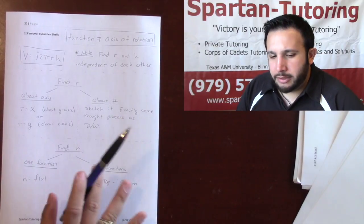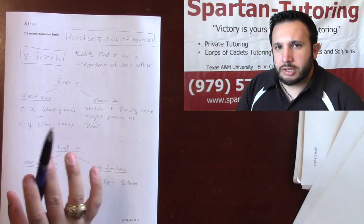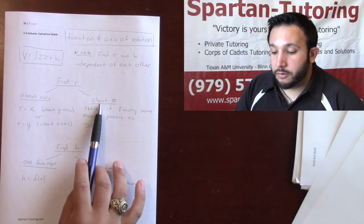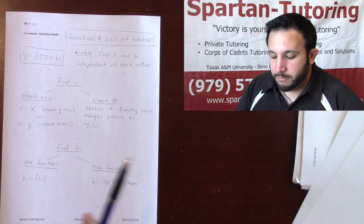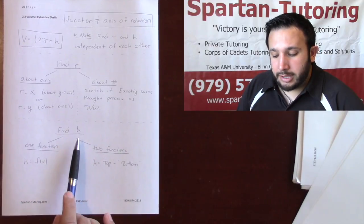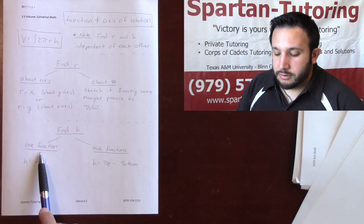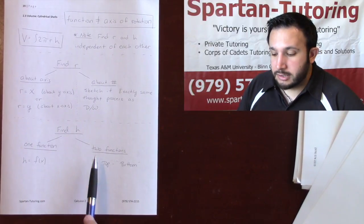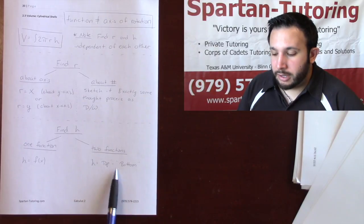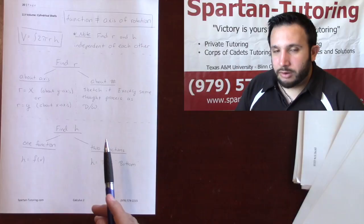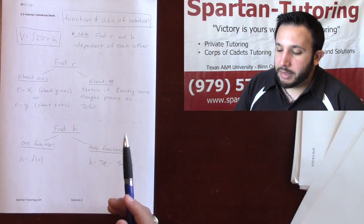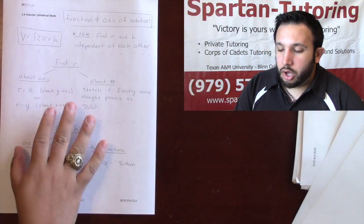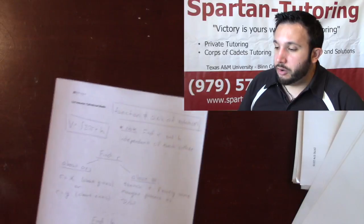If you haven't seen disks and washers yet, go to disk washer part 1 to see how to find r when rotated about a number. To find h, your height: if you have one function, h is your function — done. If you have two functions, h is top minus bottom, just like we did with area and disk washers. Use this as our cheat sheet, and let's go ahead and do four examples covering all the different combinations for cylindrical shells.